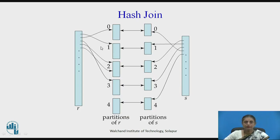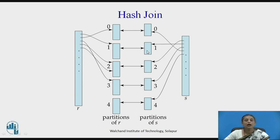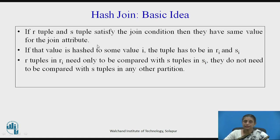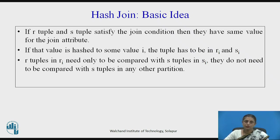Look at this. r will be partitioned into 0 to 4 partitions, and s is also partitioned. Then joining will be performed only between r0 and s0, r1 with s1, because they have the same hash value. If r and s are tuples that satisfy the join condition then they must have the same hash value. If they have different values, it means their join attribute value is different, and this hash value is used for joining.